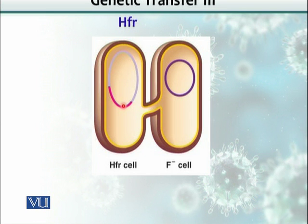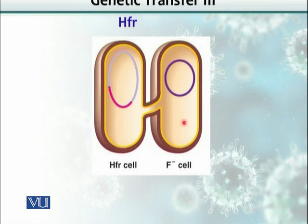What happens is that most of the time when this high-frequency recombination cell starts sending or transferring genes from one bacterium to another, the transfer does not get completed. That means the entire plasmid does not get transferred. So this cell acquires only a few genes or partial fertility factors, and it never becomes an F-positive cell. This is the key difference in high-frequency recombination cell conjugation.